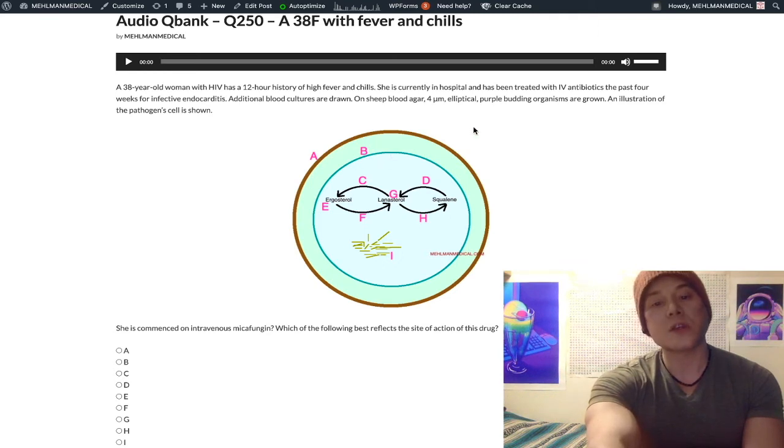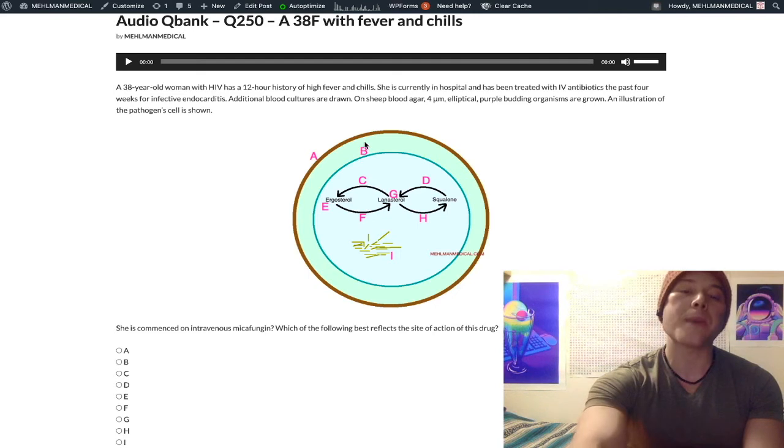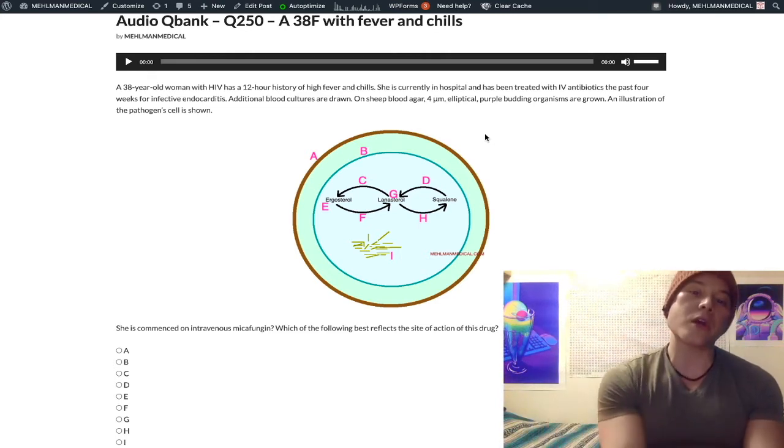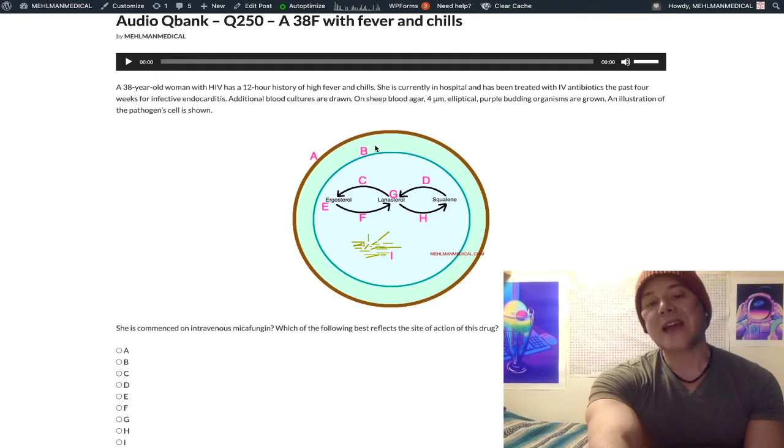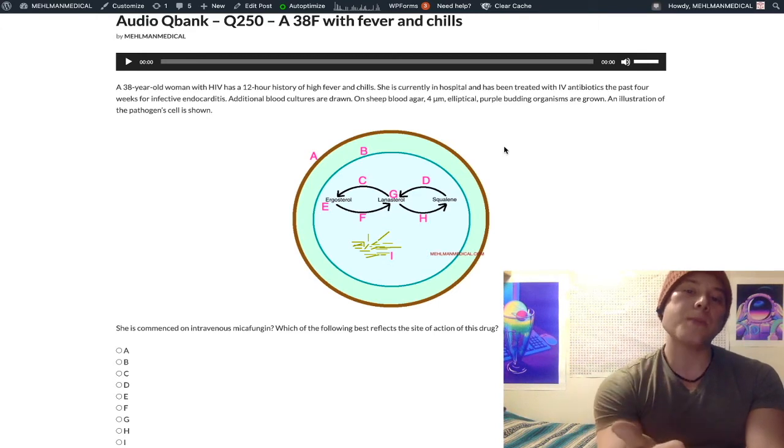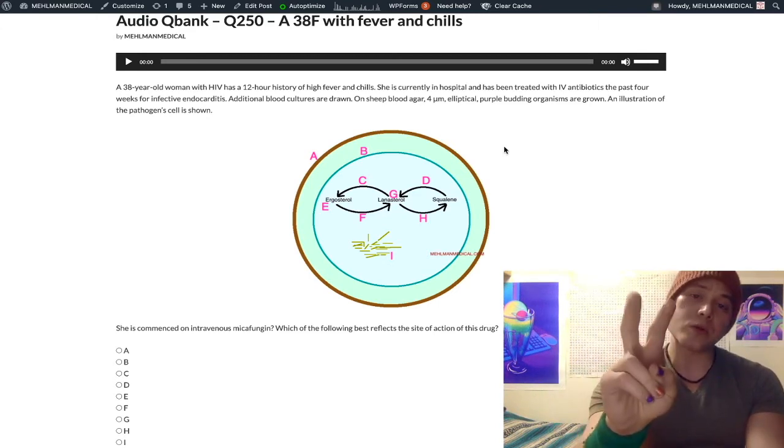Now, choice B refers to amphotericin B and nystatin. They poke holes in the ergosteral membrane. They target porin proteins. Amphotericin B, classically cryptococcus neophormans meningitis. You start it with flucytosine, and then you taper with a year of fluconazole. Correct, a year. Fucking long. Nice stat. And I should also say amphotericin B, it causes hypokalemia, hypomagnesemia.